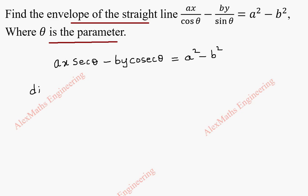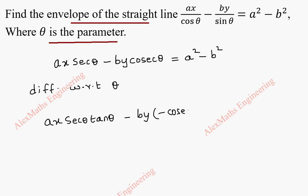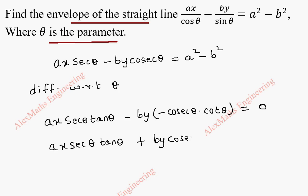Now, differentiating with respect to theta — other than theta, remaining terms are constant. So Ax is a constant which we keep as it is. The derivative of secant theta is secant theta tan theta. Minus by is a constant kept as it is. The derivative of cosecant theta is minus cosecant theta cot theta. We can make this as plus: Ax into secant theta tan theta plus by cosecant theta cot theta equal to 0.